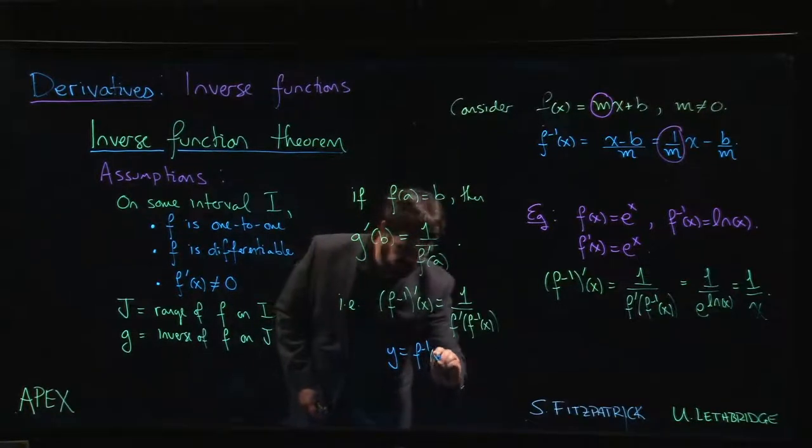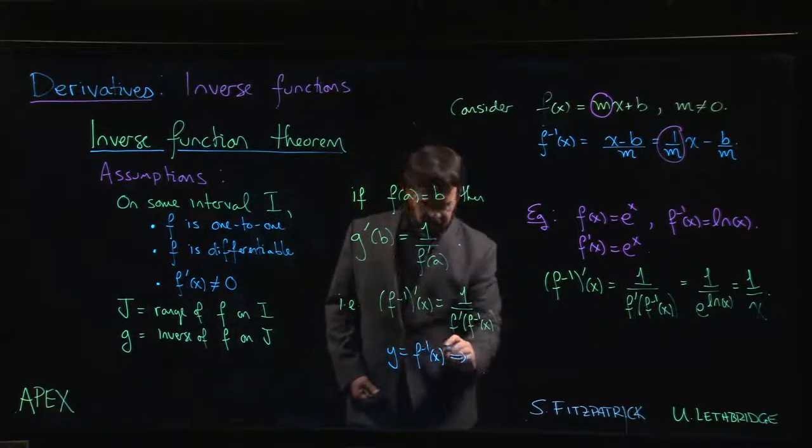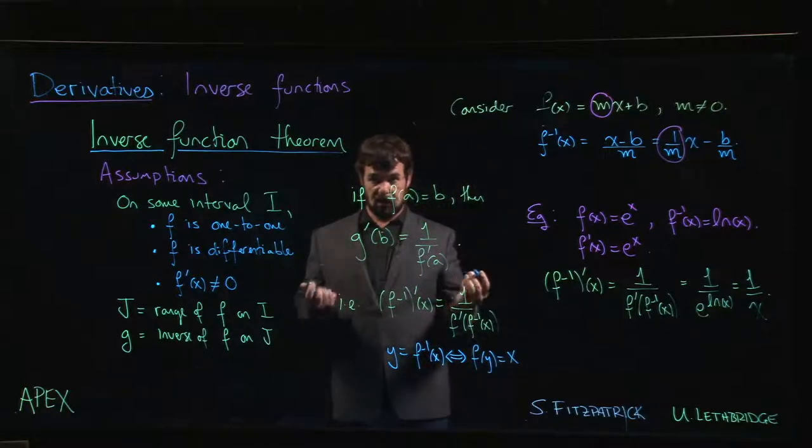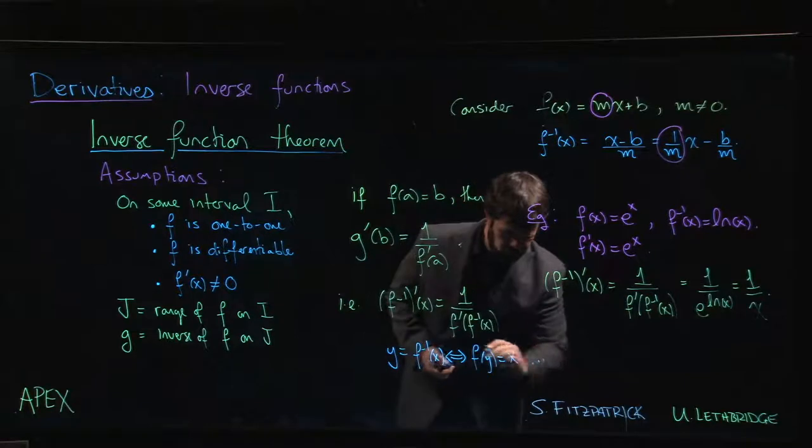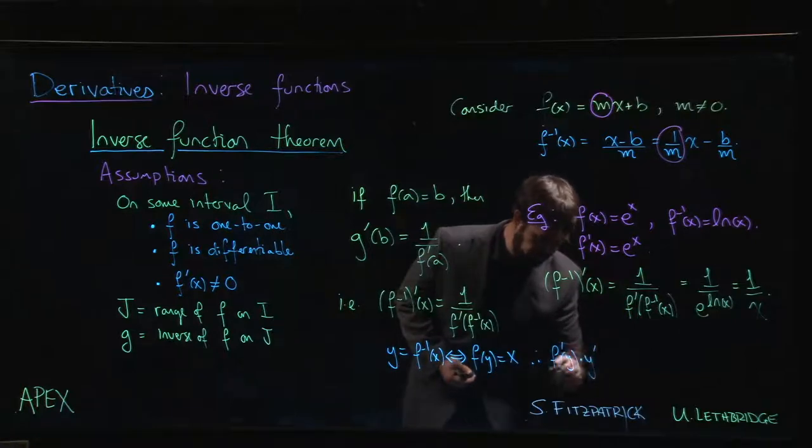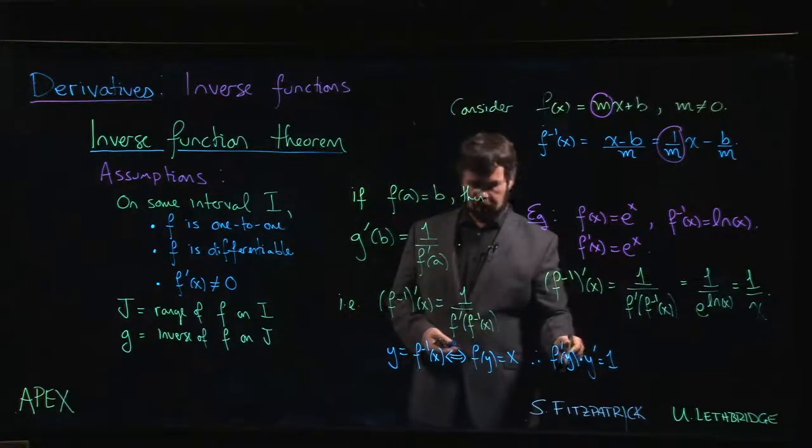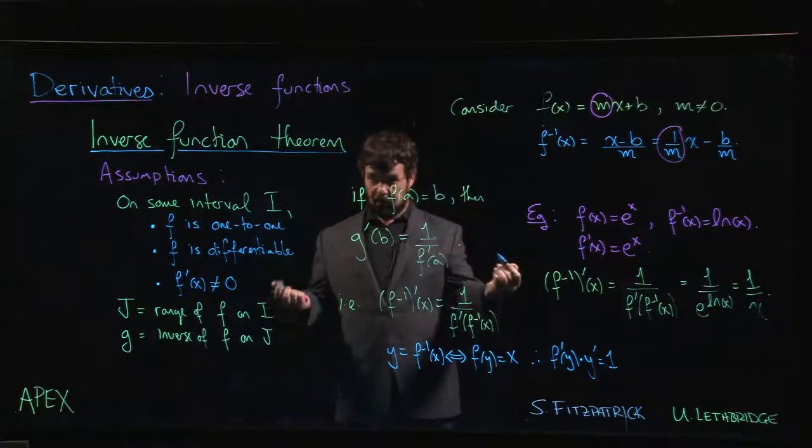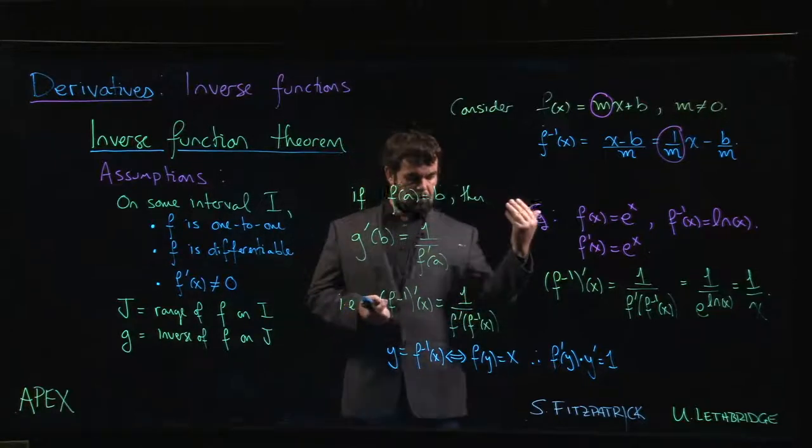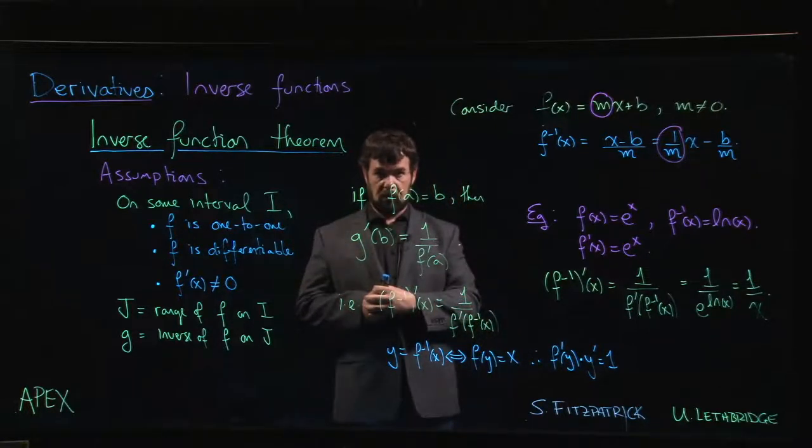If you let y equal f inverse of x, right—and we'll use this technique in a few examples to come—if y is equal to f inverse of x, we know that that's the same thing as saying f(y) is equal to x. Now you can take the derivative of both sides using implicit differentiation. So f prime of y times y prime is the derivative of x, which is just 1. So solving for y prime: y prime is 1 over f prime of y, which is 1 over f prime of f inverse of x. So it's a simple exercise in implicit differentiation to come up with this formula. The only catch is you sort of have to know in advance that that derivative actually exists in order to do the implicit differentiation.